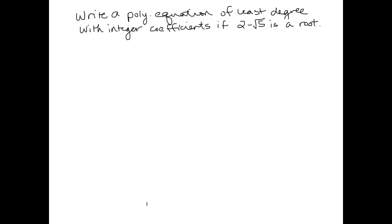2 minus root 5 is a root, so its conjugate would be 2 plus root 5. So since the irrational root theorem applies here, we're going to say that the conjugates must both be roots.